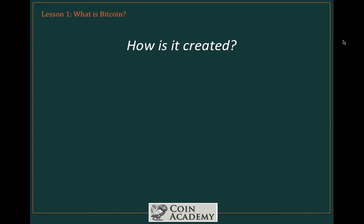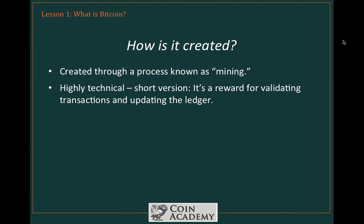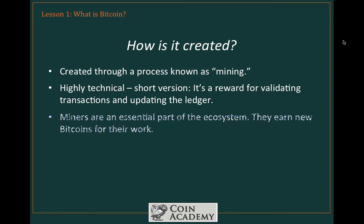Another common question is: how are Bitcoins created? This is through a process known as mining. Without diving into the technical aspects, the short version is that Bitcoins are given out as a reward for validating transactions and updating the ledger. The network of people running Bitcoin software all over the world are rewarded for validating transactions and updating the ledger, giving them all a stake in maintaining it. It's extremely competitive. Miners earn new Bitcoins for their work, at least up to the point that Bitcoins cease to be produced.